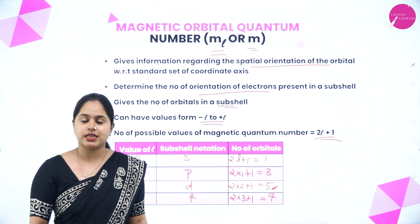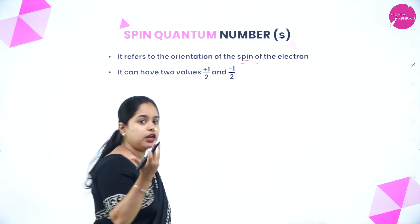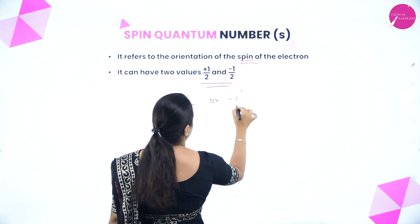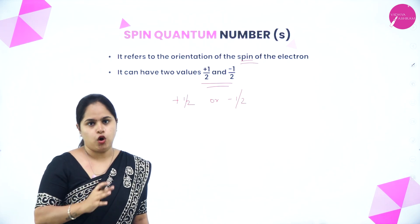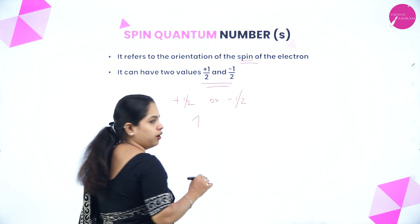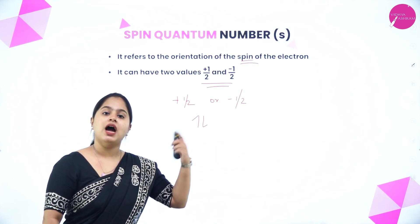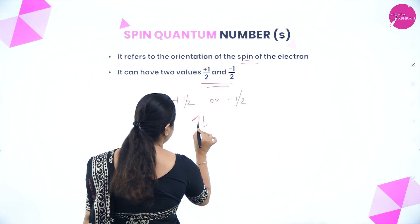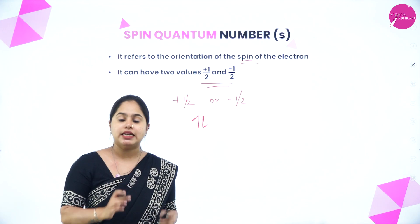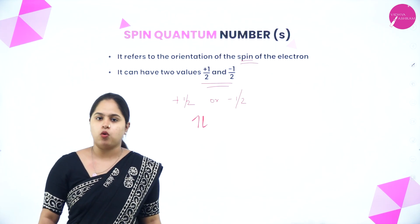Moving on to the spin quantum number, which refers to the orientation of spin of the electron. It can have only two values: +½ or −½. In an orbital, one electron will have +½ rotation (clockwise) and the other −½ rotation (anticlockwise). The four quantum numbers — principal, azimuthal, magnetic, and spin — are now covered.